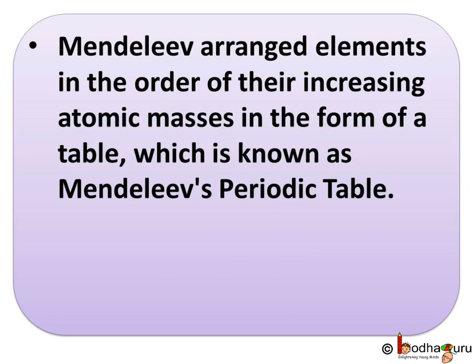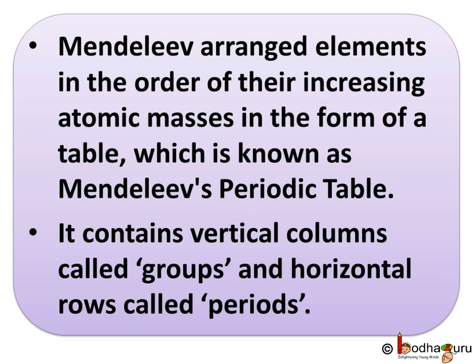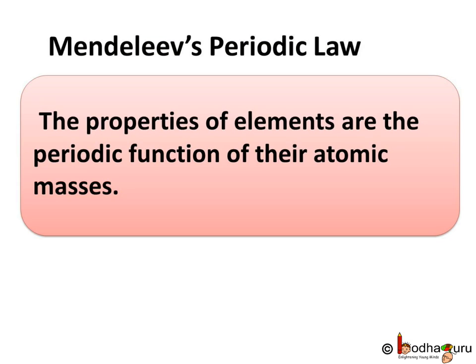So to sum up, Mendeleev arranged elements in order of their increasing atomic masses in the form of a table, which is known as Mendeleev's periodic table. The periodic table contains vertical columns called groups and horizontal rows called periods. And lastly, Mendeleev's periodic law states that the properties of elements are the periodic function of their atomic masses. That's all for now.